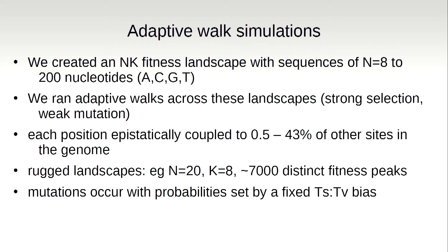We started investigating this with adaptive walk simulations. The idea is that you have a random sequence of A, C, G, and T's, and we have a mapping from the sequence to fitness. I've used the well-studied NK fitness landscape mentioned earlier this morning — it's a tunably rugged landscape, so you can add as much or as little epistasis as you like. You start with a random sequence, allow it to mutate. If the mutation provides a benefit, that mutation may fix — a step in the adaptive walk is taken with probability 2S, for example. Deleterious mutations can also fix, but with a lower probability. Then you just let the sequence evolve over time.